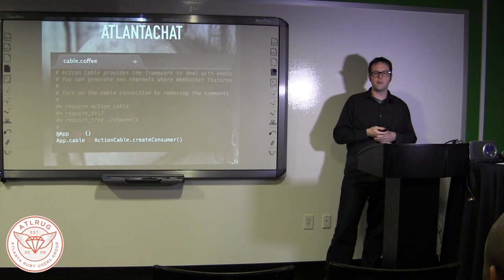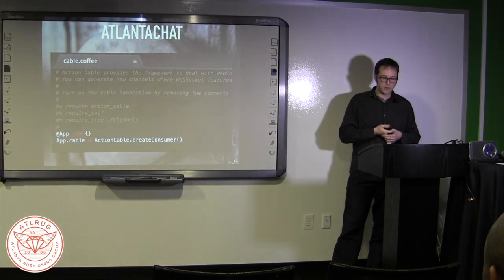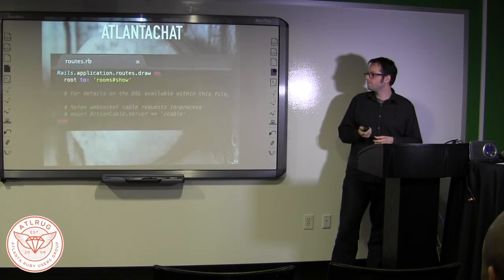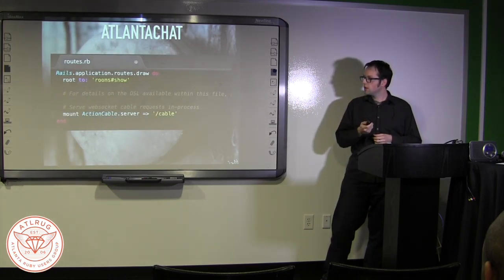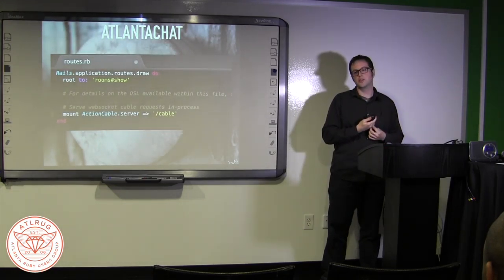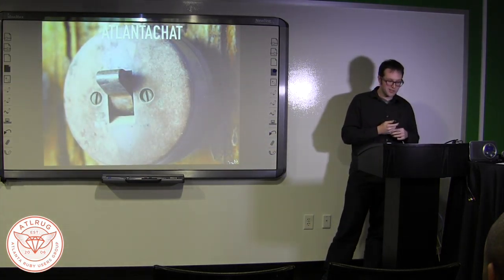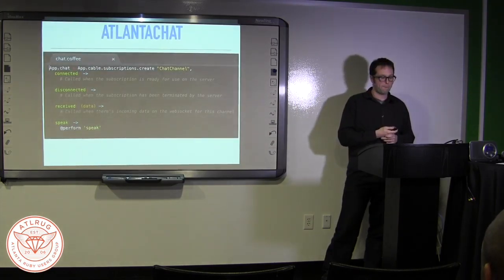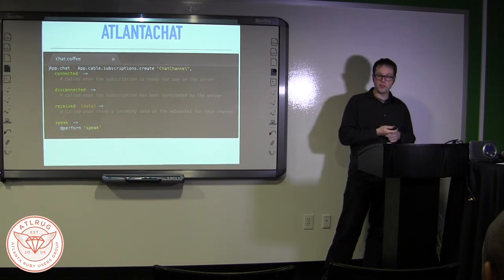The client side switch is found in a cable.coffee file that was generated in your JavaScript's directory. It comes looking like this, and you enable Action Cable by merely uncommenting the last two lines. Notice this sets a global app variable, if it doesn't already exist, and returns and assigns Action Cable's create consumer functionality to app's cable property. To do it on the server side, we head over to the routes folder and uncomment the last line to mount the Action Cable server. Voila, it is turned on. So now let's hook up that speak functionality in our chat channel so we can post messages to our app.